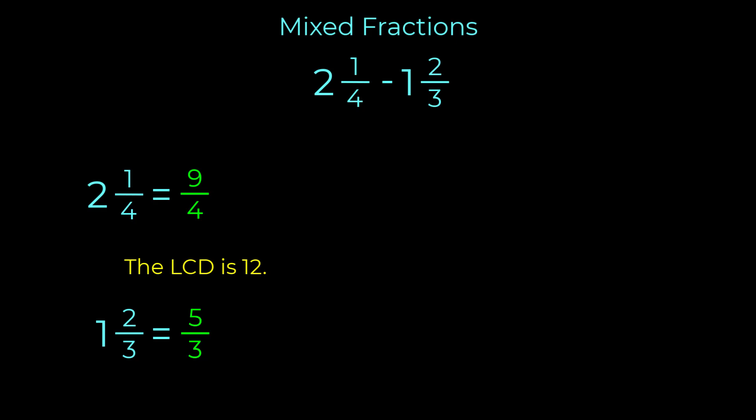For the fraction nine over four, we multiply both the numerator and denominator by three to give us the equivalent fraction of twenty-seven over twelve.